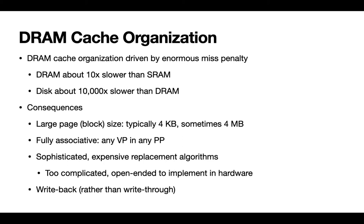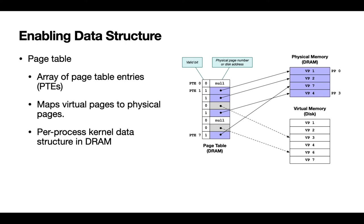We want to maintain pages in memory as long as we can, even if they're being updated by the running program. It's only when we need to evict a particular page that we finally pay the cost of flushing that information back out to disk. The fact that the kernel does all this movement between physical memory and virtual memory on disk means we need some way of keeping track of what's mapped to what, and the enabling data structure that makes that possible is something called a page table.